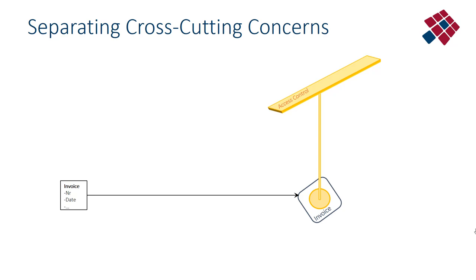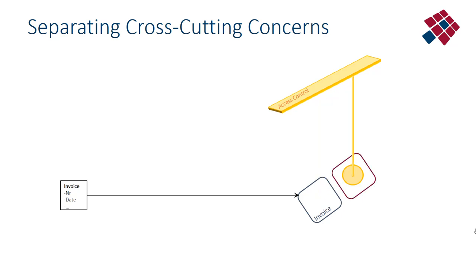Separating concerns is also valid for separating cross-cutting concerns. A cross-cutting concern is a different change driver than the main class representing the data of an invoice — they have an independent life cycle. The invoice may vary in its attributes, but the solution you use may also vary: you may switch to another access control solution, or the API or annotations may change. So this is a separate change driver and should be separated into a separate software module, well encapsulated, so that if you change the implementation of interconnecting with the framework, that change doesn't ripple through but remains confined within that class.